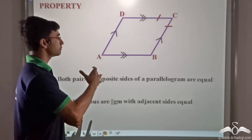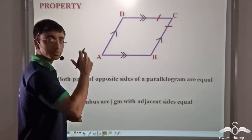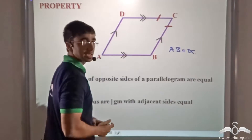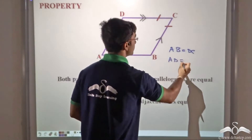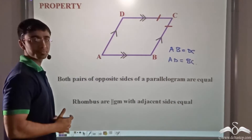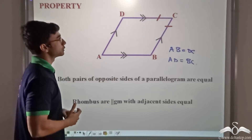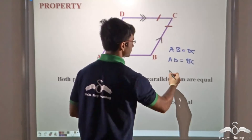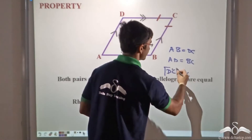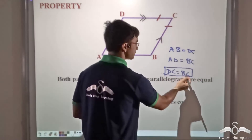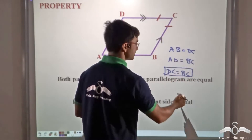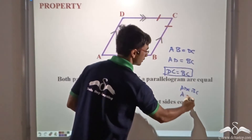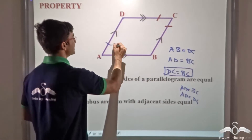What does this mean? If we consider parallelogram ABCD, since this is a parallelogram, opposite sides will be equal, so AB equals DC and AD equals BC. Now if we consider a rhombus, a rhombus is a parallelogram with adjacent sides equal. In figure ABCD, we have shown a rhombus where DC equals BC. We can replace the value of BC and write AD equals BC, which gives us AD equals DC.